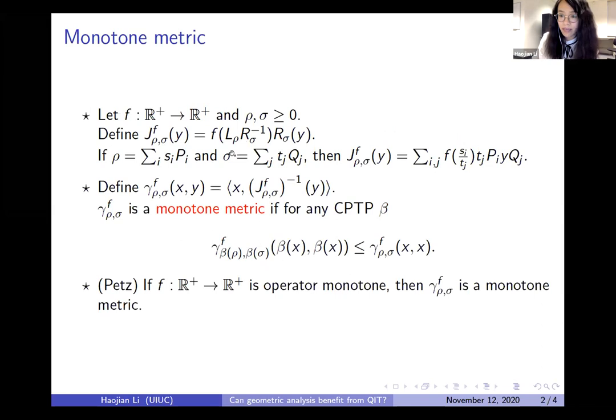Say we have a function F from R plus to R plus and two positive matrices, rho and sigma. We can define a relative modular operator J using left multiplication by rho and right multiplication by sigma. Since we're working with matrices, J is basically a scalar multiplier. Using this, we define a metric gamma.